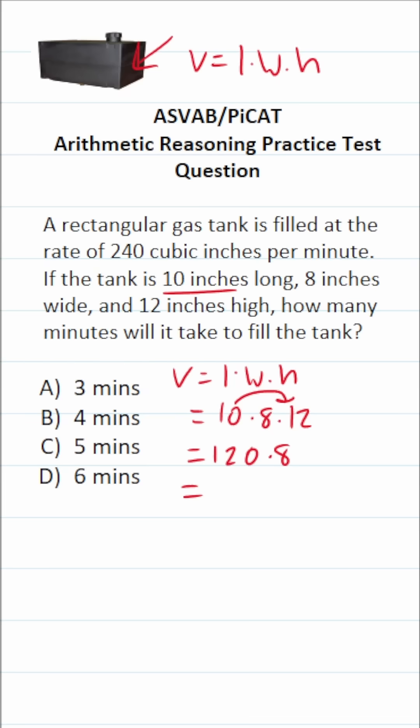And if you can't do this part mentally, do it off to the side. We have 120 times 8. 0 times 8 is 0. 2 times 8 is 16. Carry a 1. 8 times 1 is 8, plus 1 is 9. So the volume of our rectangular gas tank is 960 cubic inches.